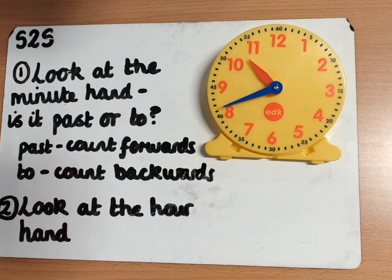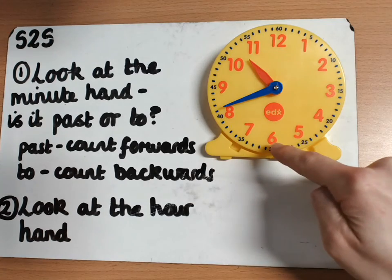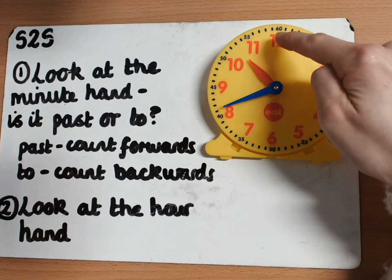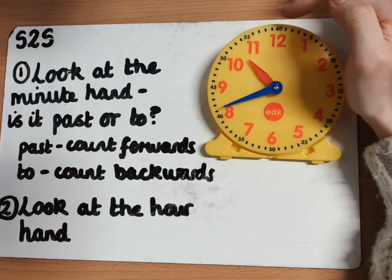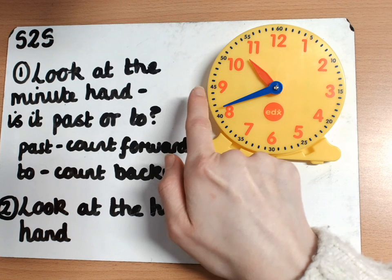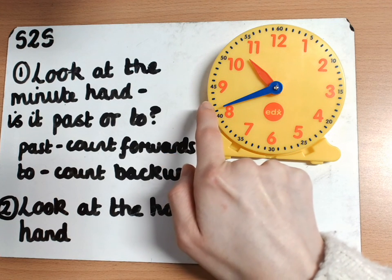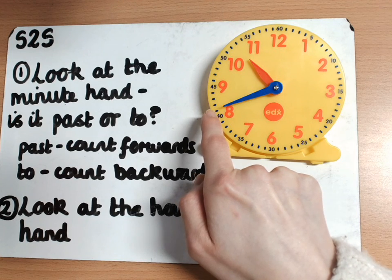Step one: look at the minute hand — is it past or to? This time it's to, because it is in this part of my clock, between the 6 and the 12 going this way. So it is to, and I'm going to be counting backwards. Using my five times tables: five times nine gives me 45, and I'm going to count backwards from there — 44, 43, 42, 41.